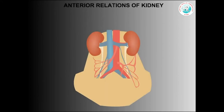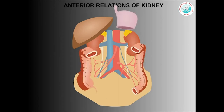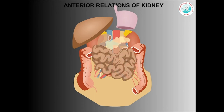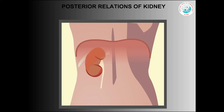Anteriorly, the kidneys are related to the suprarenal glands, liver, stomach, right colic flexure, left colic flexure, second part of duodenum, coils of jejunum, pancreas and spleen. Posteriorly, the kidneys are related to the diaphragm, 11th and 12th rib, costo-diaphragmatic recess of pleura, psoas major muscle, quadratus lumborum and transverse abdominis muscle.